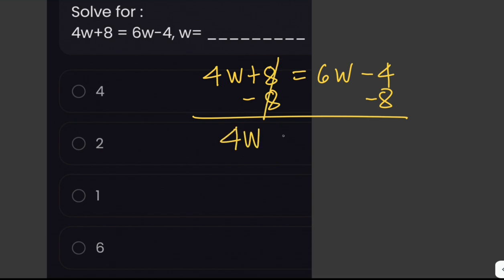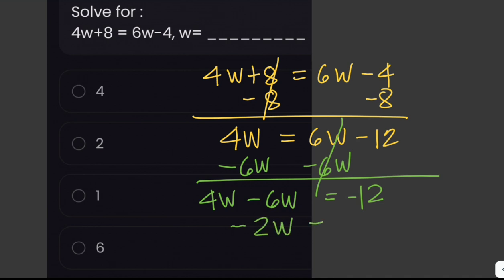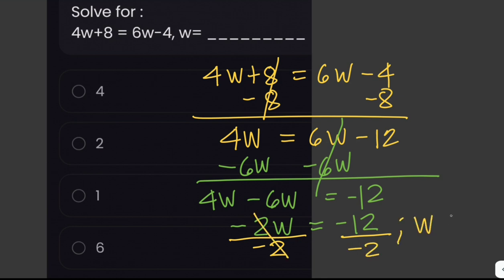We subtract 8 from both sides to eliminate 8 on the left, leaving 4w equals 6w minus 12. Then we subtract 6w from both sides, giving 4w minus 6w equals negative 12, so negative 2w equals negative 12. Dividing both sides by negative 2 gives us a positive answer of 6.